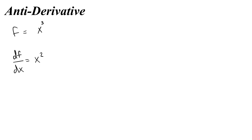What would need to be in front of x cubed, so that when I multiplied it by 3, I got 1? It would have to be 1 third. Now I can think: if I take the derivative of 1 third x cubed, do I get x squared as my derivative? Yeah, it checks out.